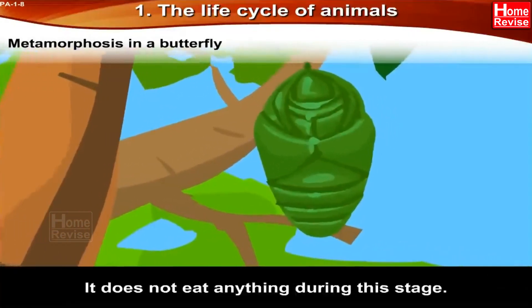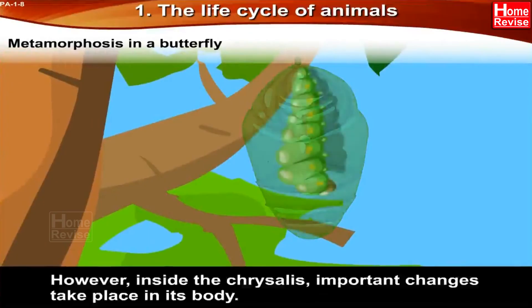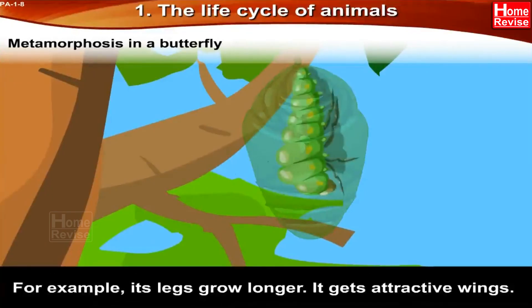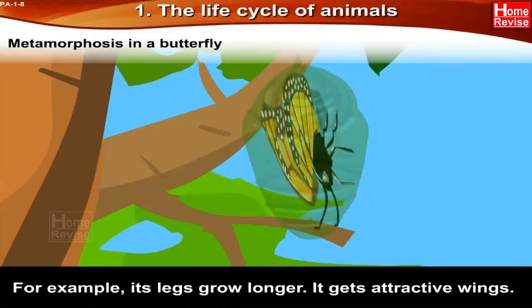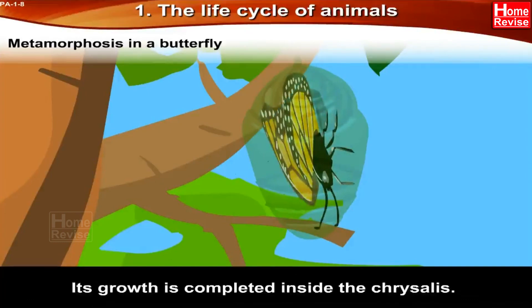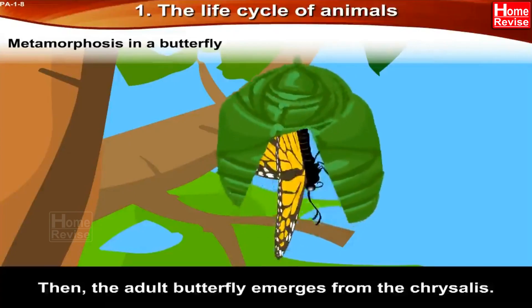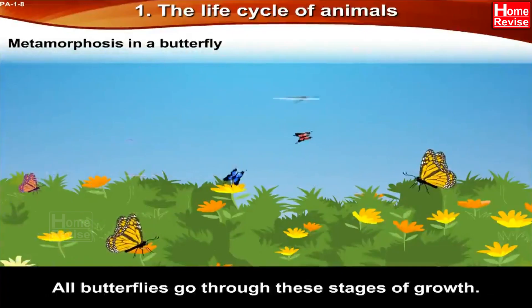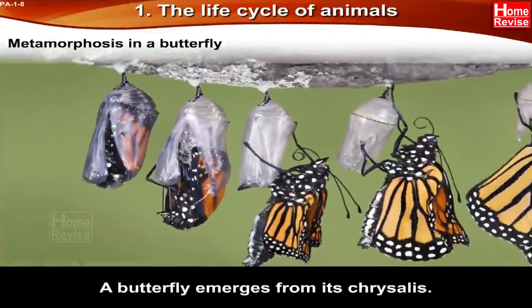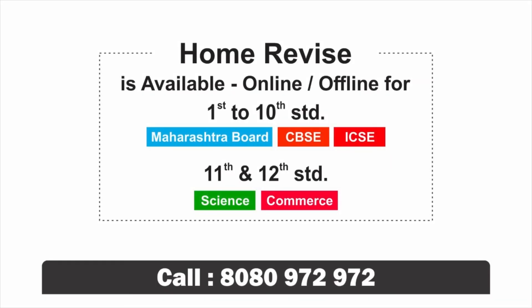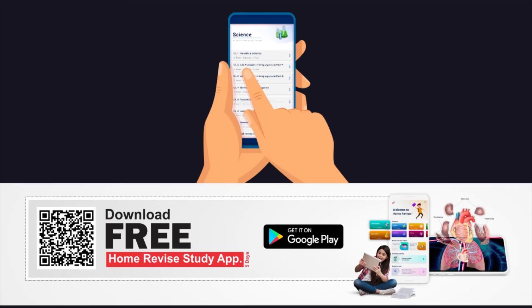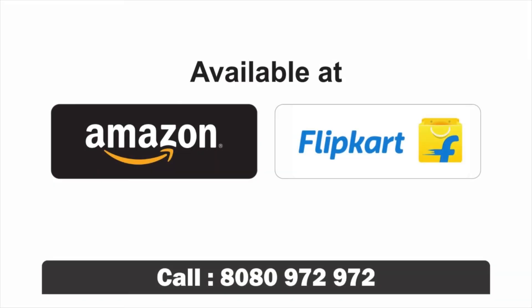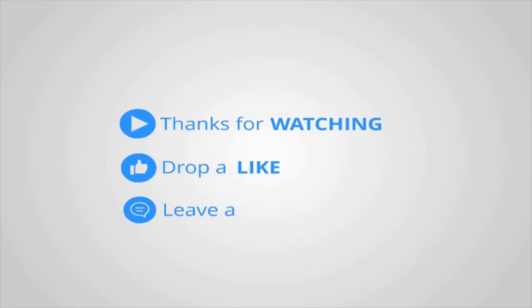The caterpillar does not eat anything during the chrysalis stage. However, inside the chrysalis, important changes take place in its body — for example, its legs grow longer and it gets attractive wings. Its growth is completed inside the chrysalis. Then the adult butterfly emerges from the chrysalis. All butterflies go through these four stages of growth.